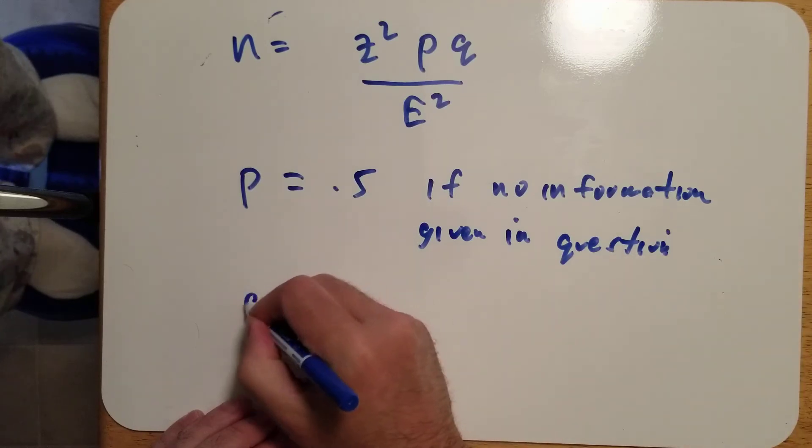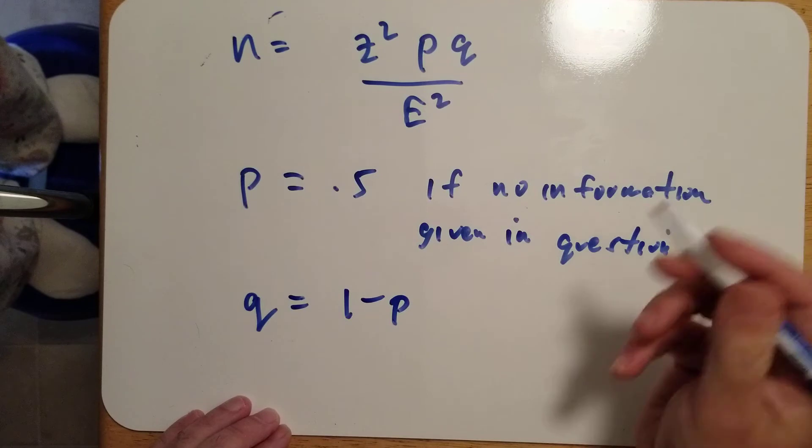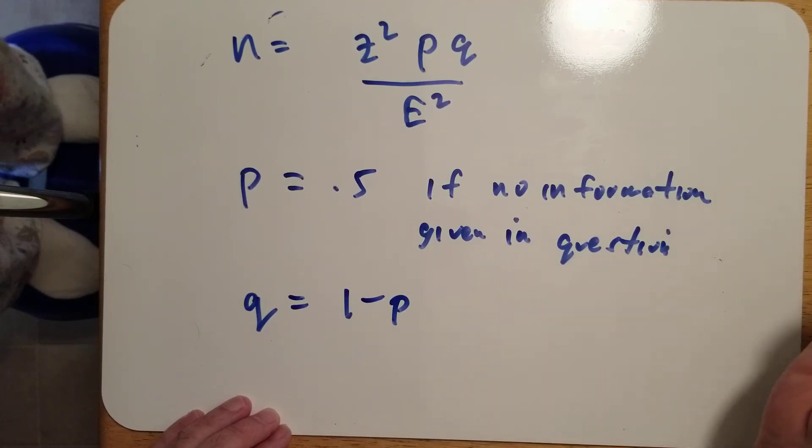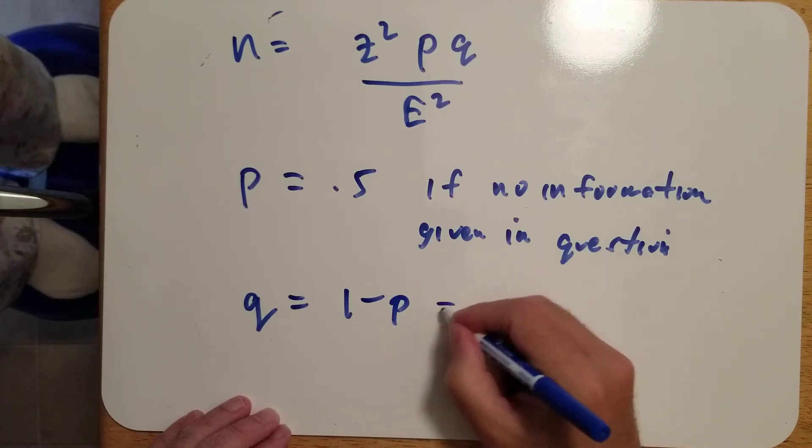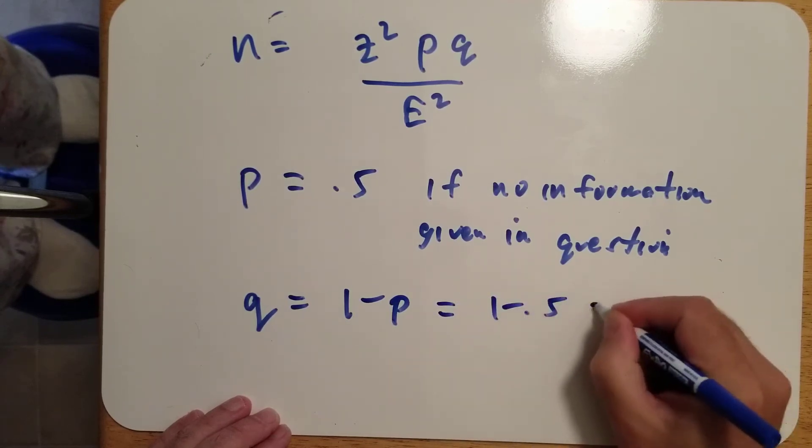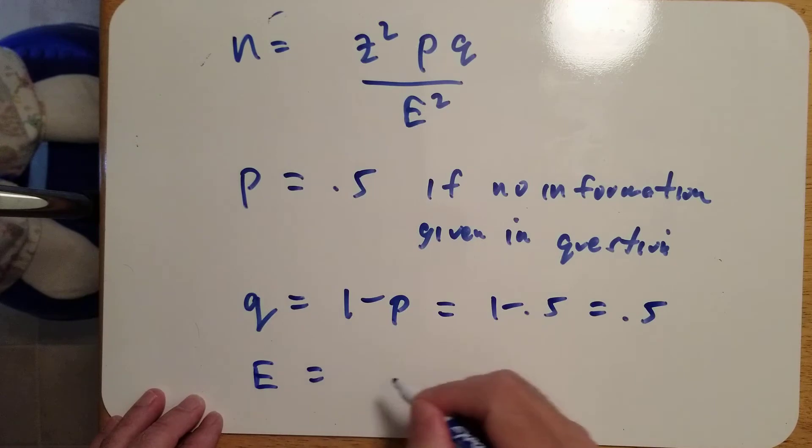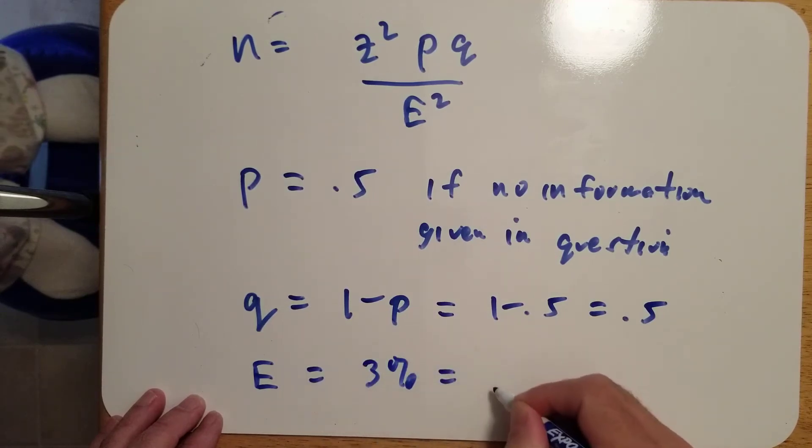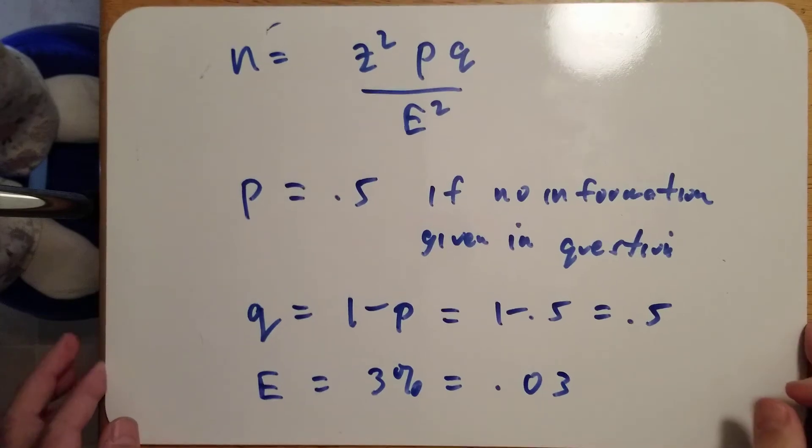Q is always 1 minus P. In this example, I didn't give you any information, so Q is 1 minus 0.5, which is 0.5. E is the error written as a decimal. For this example, E was 3%, which is 0.03. Now we have all the information to plug into this formula.